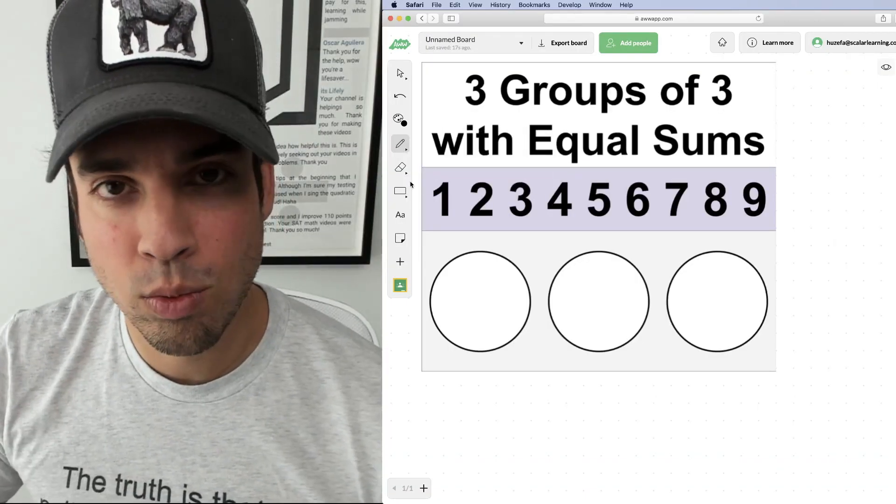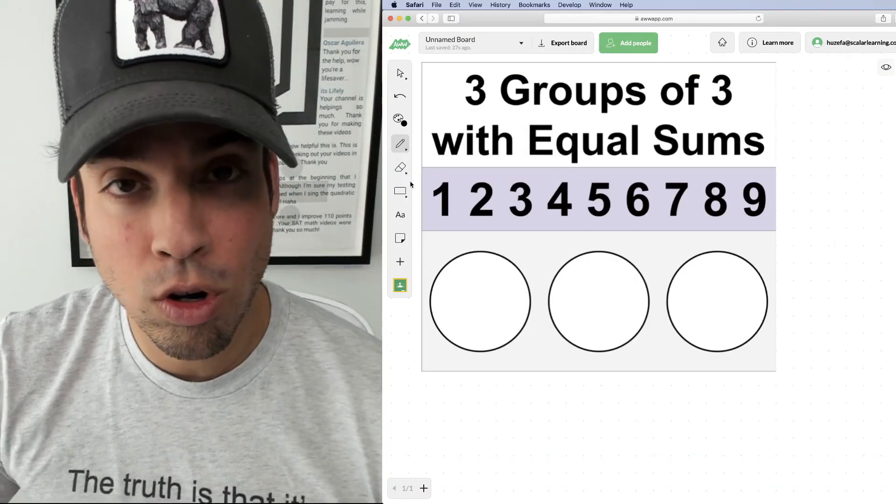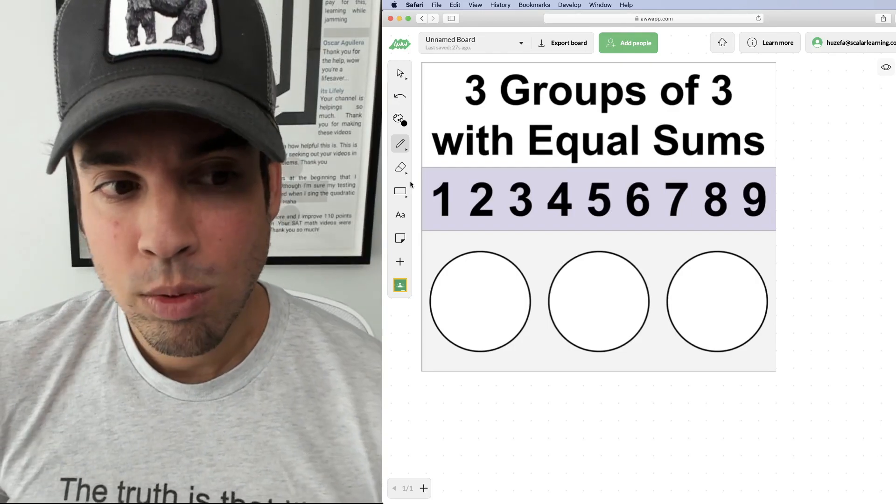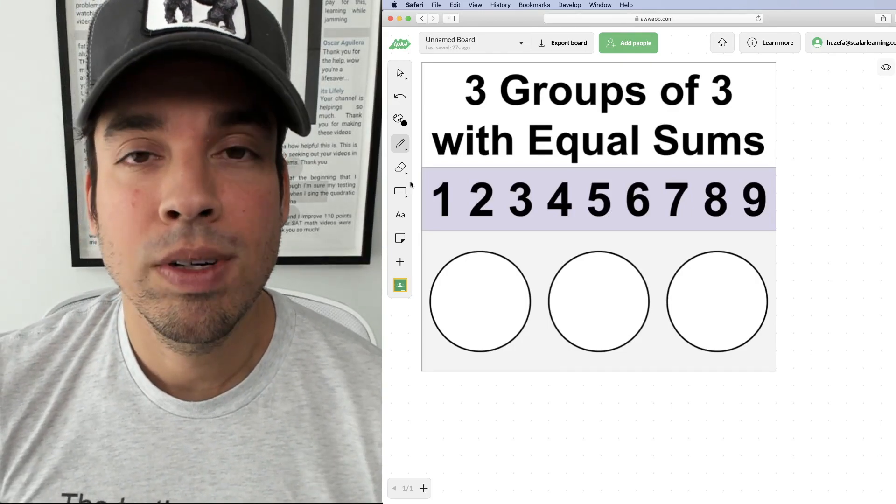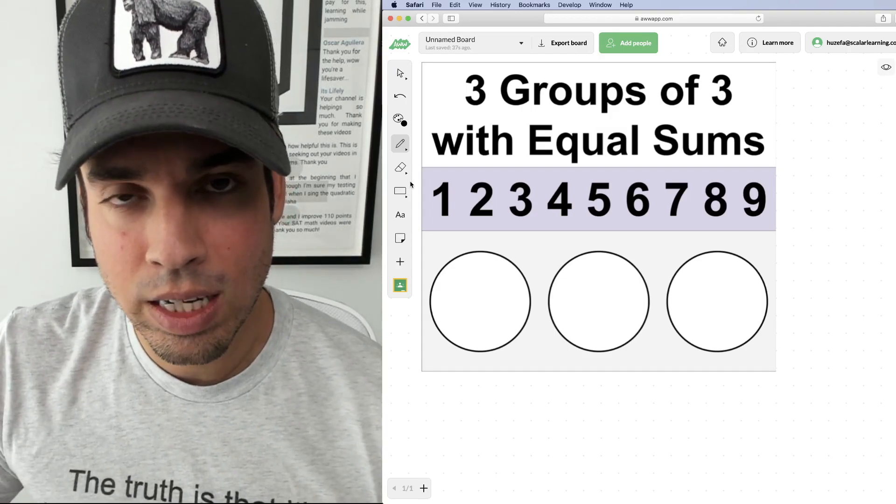So where do we begin with a problem like this? Of course, you can start with trial and error and that's not a terrible place to start. But I would say that your best bet is to first figure out what is that total that all these have to equal.